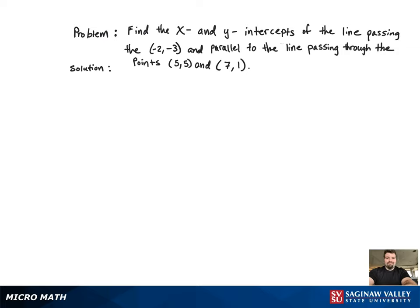We want to start by finding the slope of the parallel line, because since the lines are parallel, that's also going to be the slope of our line. So we go ahead and solve for m. We get m equal to negative 2.